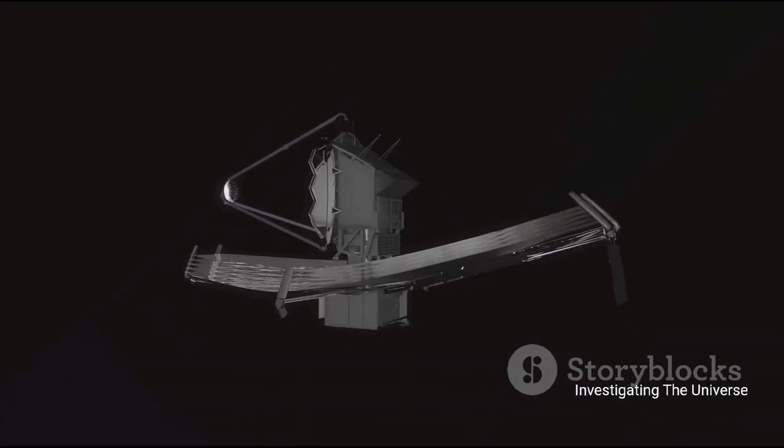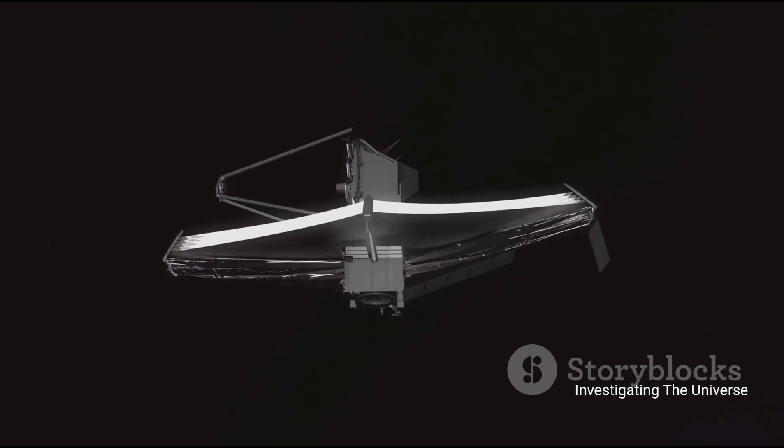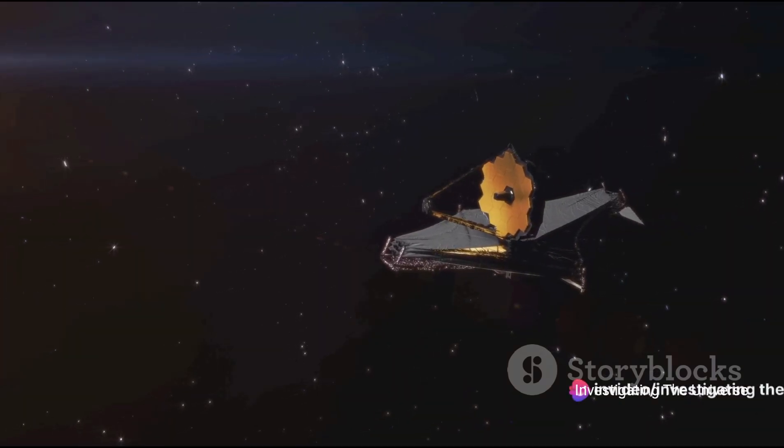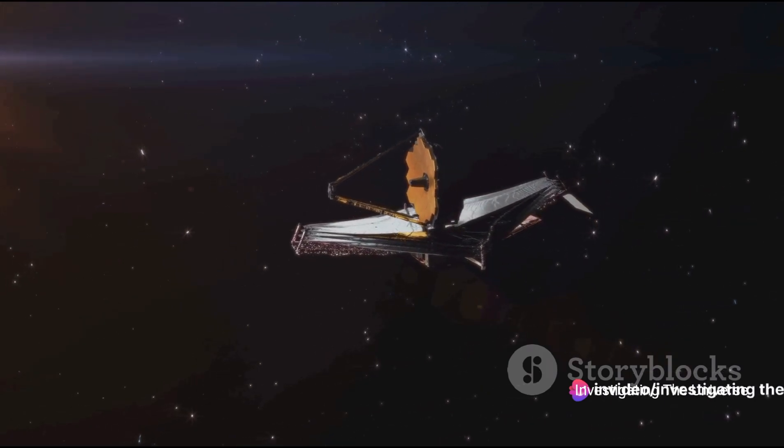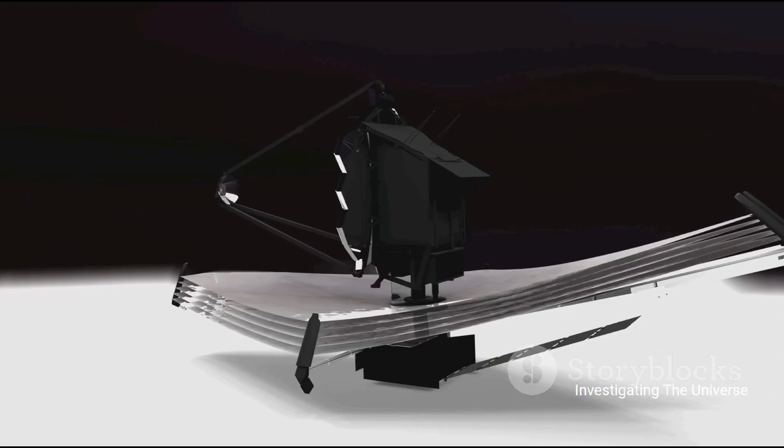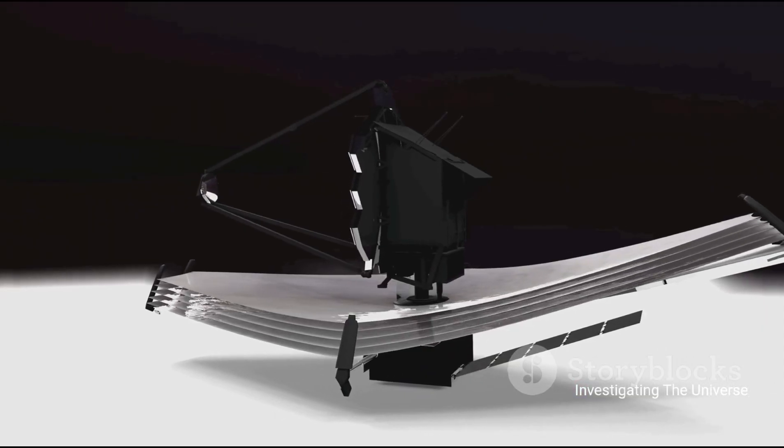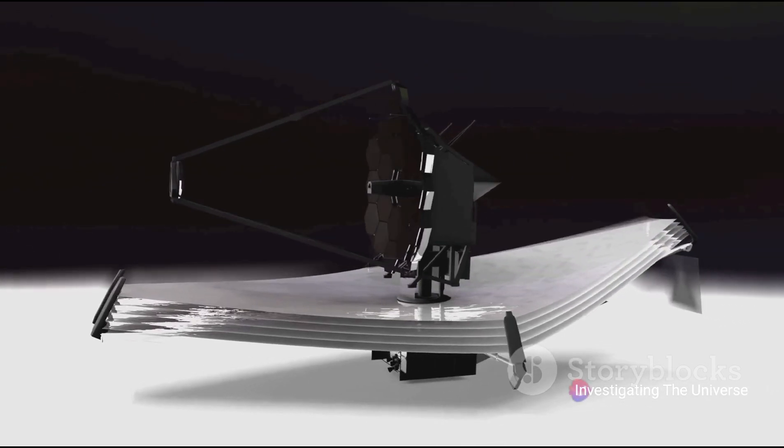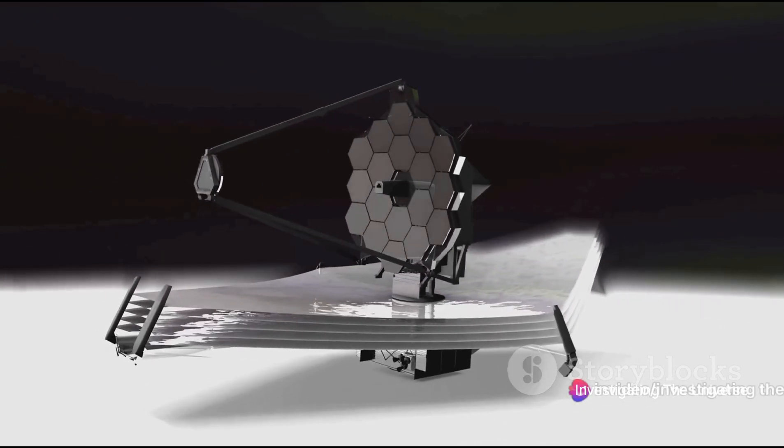This allows it to collect more light and peer further into the depths of space, making it capable of observing some of the most distant events and objects in the universe, such as the formation of the first galaxies. But it's not just about size. The JWST is equipped with state-of-the-art instruments that allow it to observe in high resolution and in various wavelengths of light, including infrared.